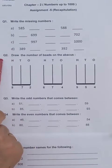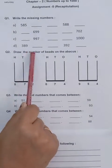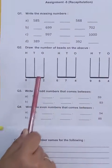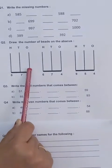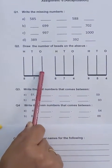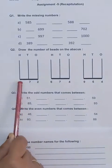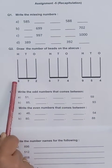Then coming to question number 2. You have to draw the number of beads on the abacus. Like you have to draw here 2 beads. Here you will be drawing 7 beads and here on 100's place you will be drawing 8 beads.